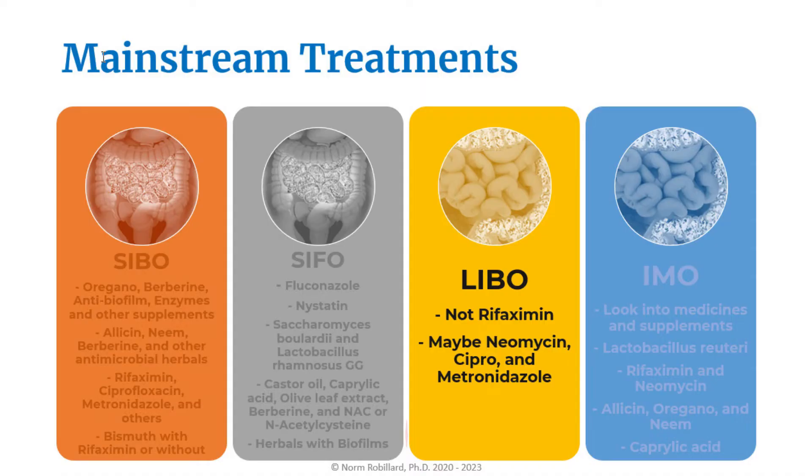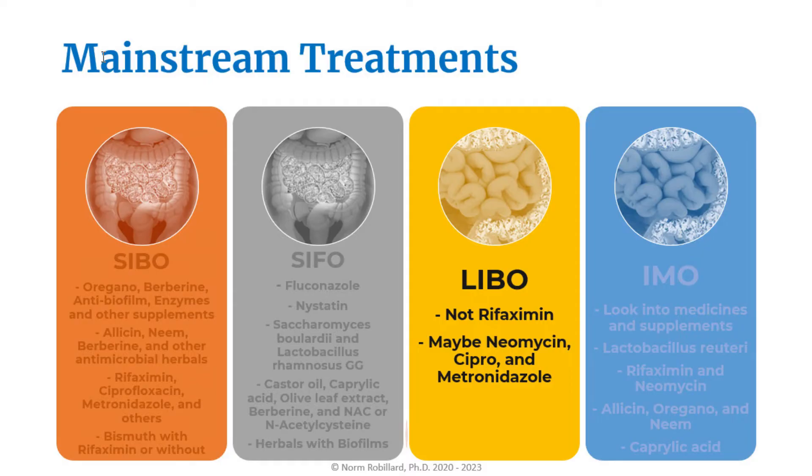About LIBO: since LIBO is a relatively new concept, there are more questions than answers about antibiotic use. One thing that's clear — rifaximin will likely not help with this overgrowth because it requires bile for optimal activity and most of the bile is reabsorbed by the end of the small intestine. But other antibiotics, including neomycin, cipro, and metronidazole, may be options.